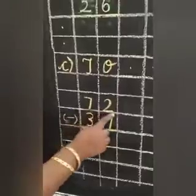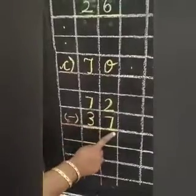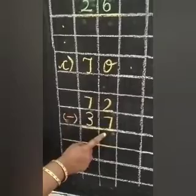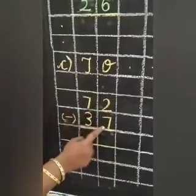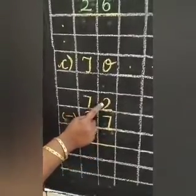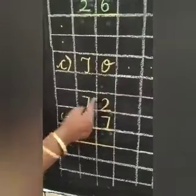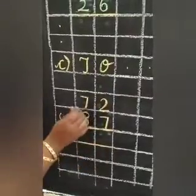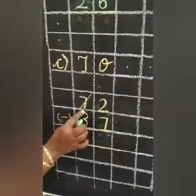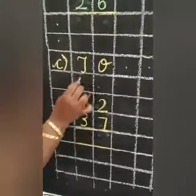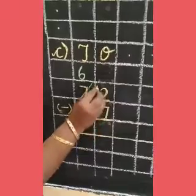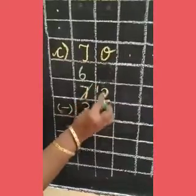Now we are going to subtract the ones place. 2 minus 7 — 7 is bigger than 2, so what we have to do? We have to borrow from the tens place. Before 7 comes 6. From here I am giving one ten to the ones place. So what is this? 12.